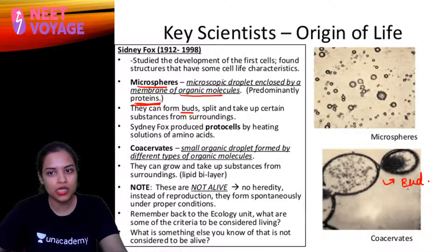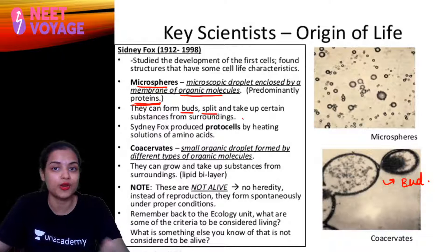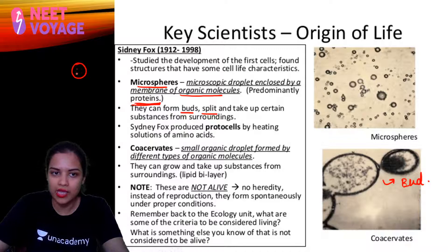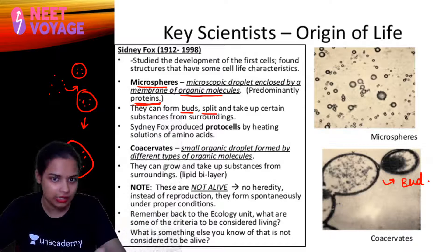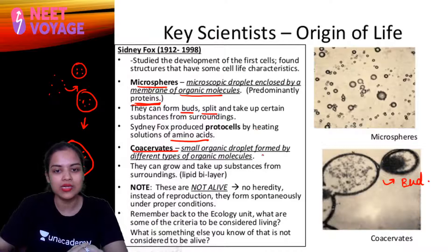Protobionts can form buds — you can see the budding and bud outgrowth. They can split and replicate, forming two microspheres, showing asexual-type reproduction. They can take up substances from the surrounding, so a small microsphere can grow larger by absorbing surrounding material and keep increasing in size. Sydney Fox produced protocells by heating amino acid solutions.